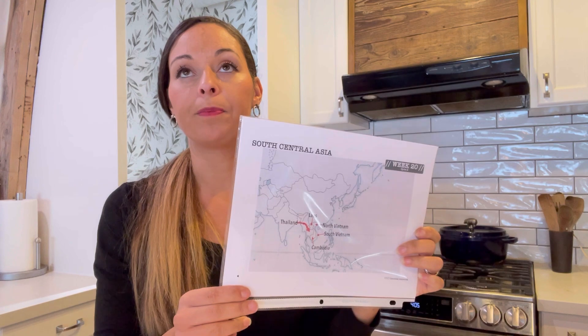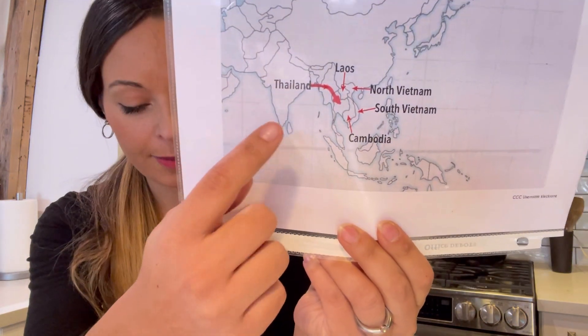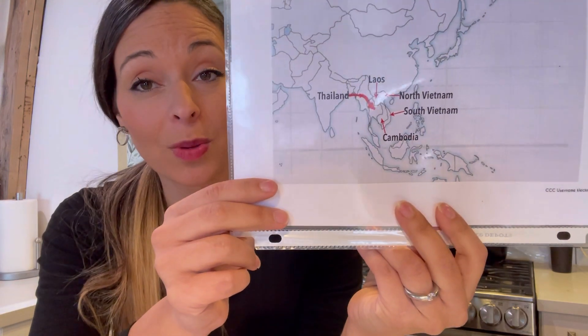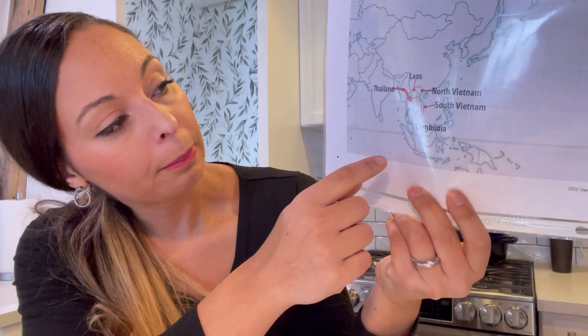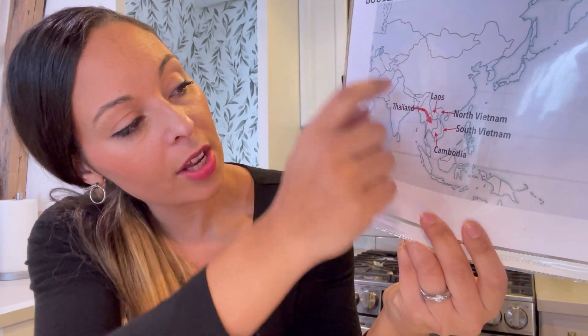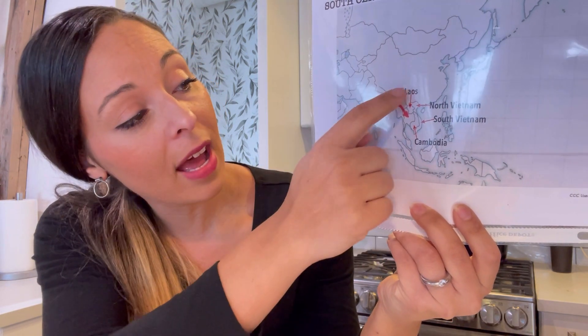For geography, we are learning South Central Asia and we sing this to "I've Got the Joy, Joy, Joy, Joy Down in My Heart." We'll show the places — we may use chopsticks again this week because the places are so close together. We'll cover: South Central Asia, Laos, Thailand, Cambodia, North Vietnam, South Vietnam. Then repeat: South Central Asia, Laos, Thailand, Cambodia, North Vietnam, South Vietnam.